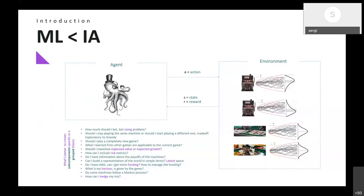Let me start with this image. My friend the octopus is going to have some coffee while being exposed to a very complex environment — several machines in a casino. My friend has to take difficult decisions and actions, and for every action it takes, it's going to get some type of reward.